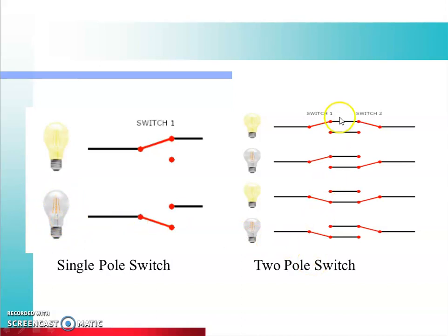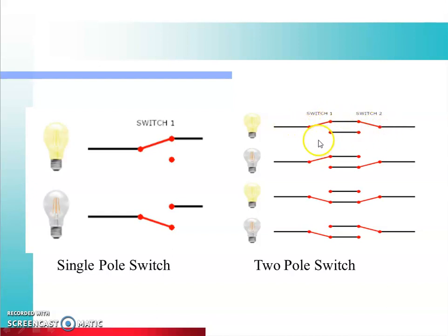Jab switch one aur switch two dono ek position mein rahenge, to yeh circuit close hai, current ko path mil raha hai, isliye lamp glow karega. Aur jab second condition mein hamne switch one ki position waisi hi rakhi jaise pehle thi, but switch two ka position hamne change kiya, to continuous path create nahi ho raha, to current flow nahi hoga aur lamp glow nahi hooga. Usi tarah, agar switch one aur switch two dono ek alag position mein hain lekin circuit complete hai, to lamp glow karega.